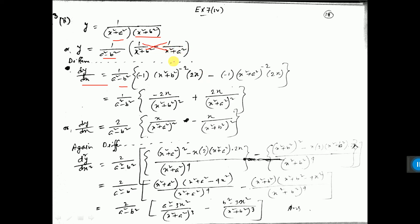Similarly (x²+a²) to the power minus 1: applying the formula, minus 1 into (x²+a²) to the power minus 2, times d/dx of x² which is 2x, and d/dx of a² is 0 — not written. This gives you the first differentiation.